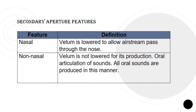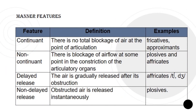For secondary aperture features, we have nasal and non-nasal. For nasal, the velum is lowered to allow airstream to pass through the nose. For non-nasal, the velum is not lowered for its production, and there is an oral articulation of sounds — all oral sounds are produced in this manner. For manner features, we have continuant: there is no total blockage of air at the point of articulation; examples are fricatives and approximants. Non-continuant: there is blockage of airflow at some point in the constriction of the articulatory organs; examples are plosives and affricates. Delayed release: the air is gradually released after its obstruction — examples are the affricates ch and j. Non-delayed release: obstructed air is released instantaneously; example is plosives.